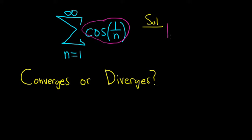If we take the limit as n approaches infinity of cosine of 1 over n and get something that's not zero, then the series diverges. If we get zero, the test fails.